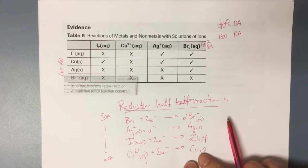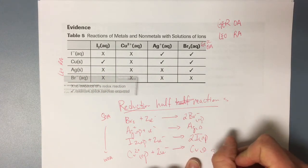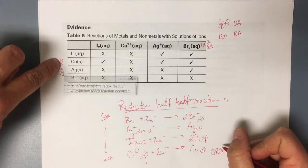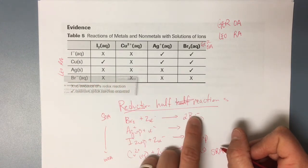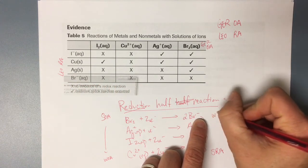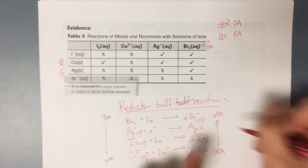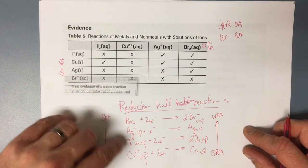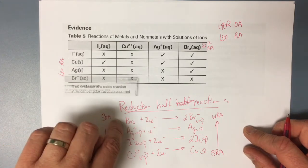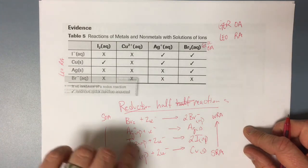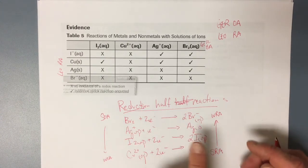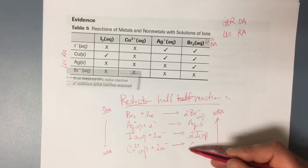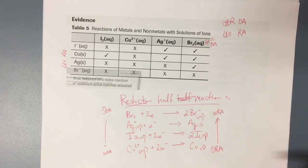Copper metal reacted with three different things, so it is my strongest reducing agent — it's a reducing agent because it's losing electrons. Bromide as a reducing agent was my weakest reducing agent. So this table is set up with reduction half reactions: my strongest oxidizing agent, the most reactive, goes at the top; my weakest oxidizing agent goes at the bottom. If I read these reactions going the other way, this side represents reducing agents — strongest at the top, weakest at the bottom.